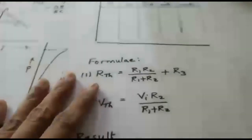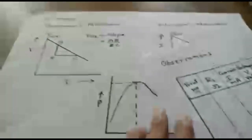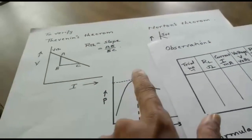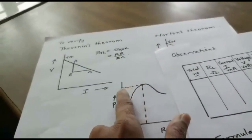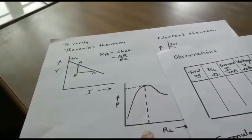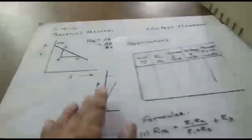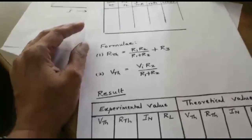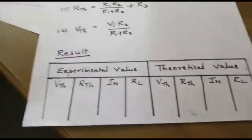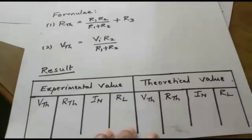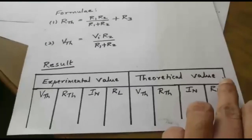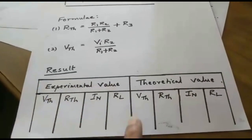Similarly, for the maximum power transfer theorem, when you plot power versus load resistance you get a curve with a maximum power point. The load resistance RL corresponding to maximum power should equal the internal resistance R — that is, RL = R. When verified, the experiment is complete. We compare all experimental values with theoretical values, and that is the result section.